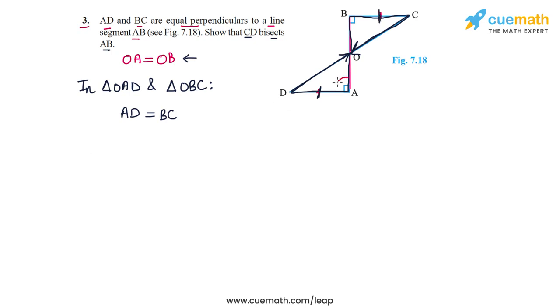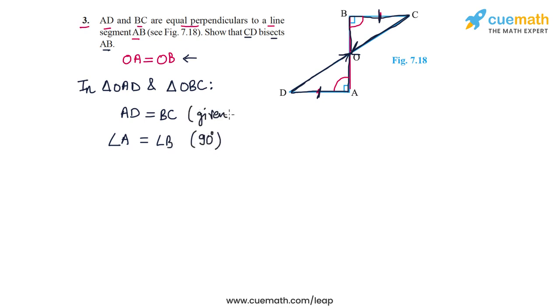Also, angle A and angle B will be equal because both of them are 90 degrees. So angle A is equal to angle B, as both are 90 degrees, and AD is equal to BC is given to us.